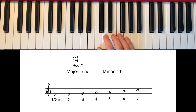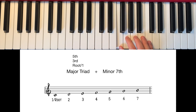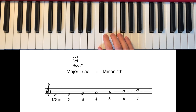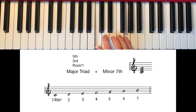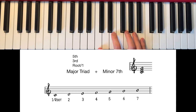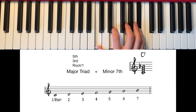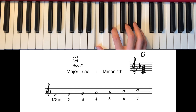Here's our C major scale again. First we need our major triad, the 1, 3 and 5, which is C, E and G. Then we need to find our major 7th and flatten it to turn it into our minor 7th, making it B flat. Therefore, our C7 chord is made up of C the root, E the 3rd, G the 5th and B flat the minor 7th.